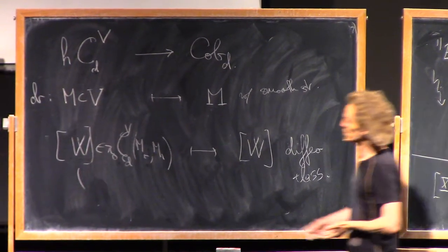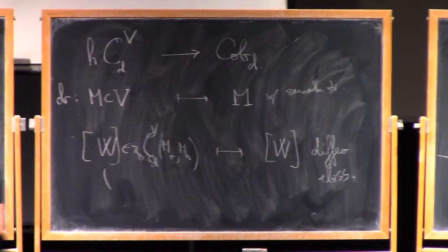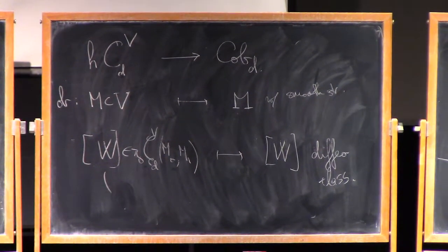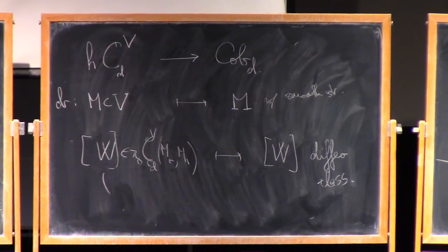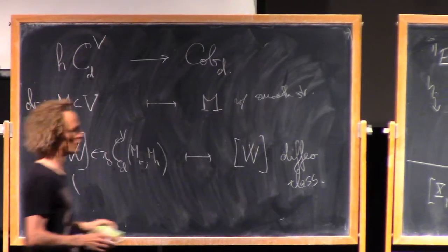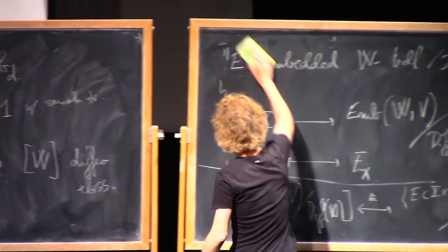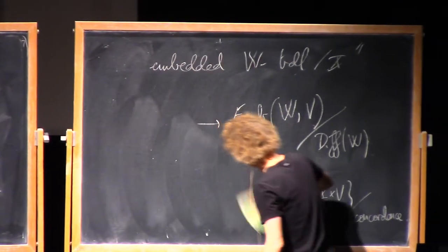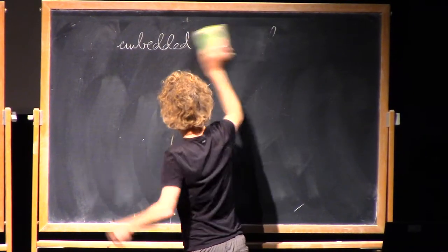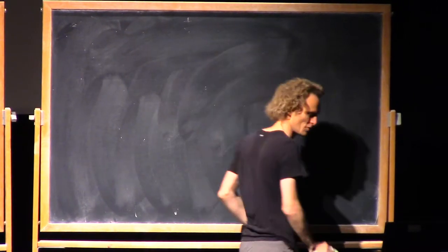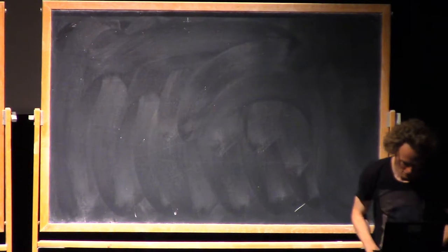And this preserves composition, so this is a functor. And I claim that if the dimension of V is big compared to D, then this is an equivalence of categories. And in particular, that's going to be true if you take that colimit over bigger and bigger V.